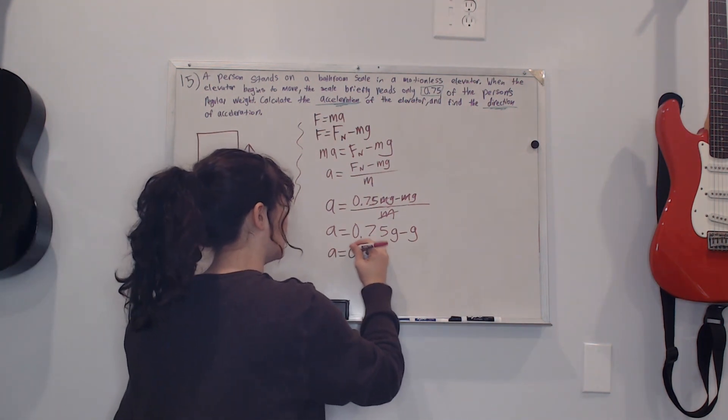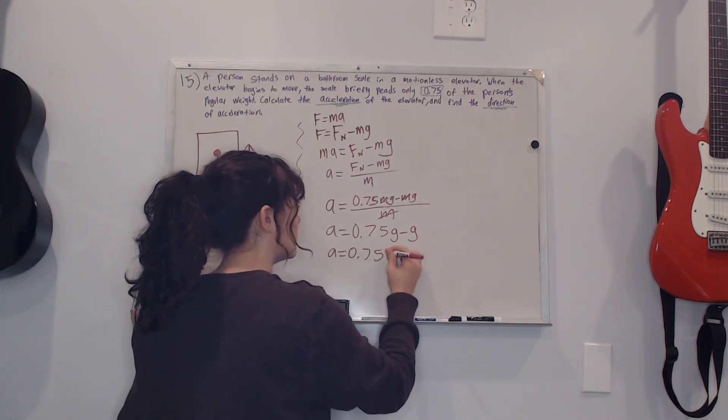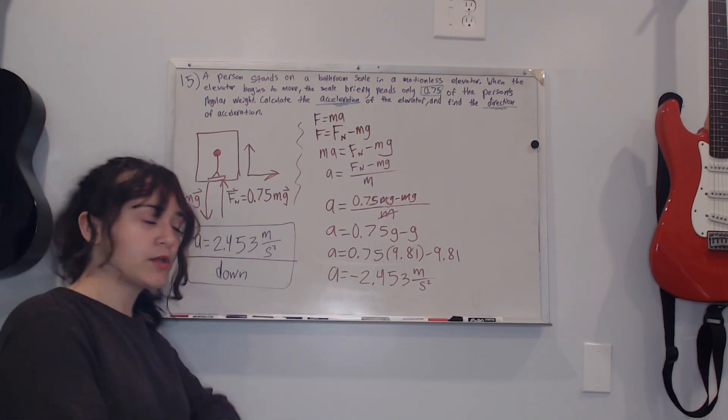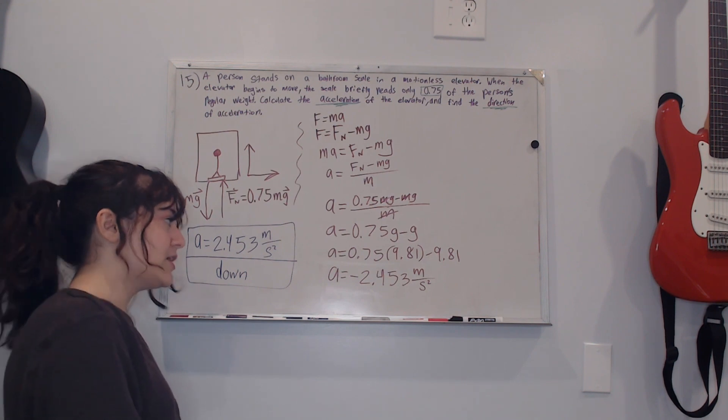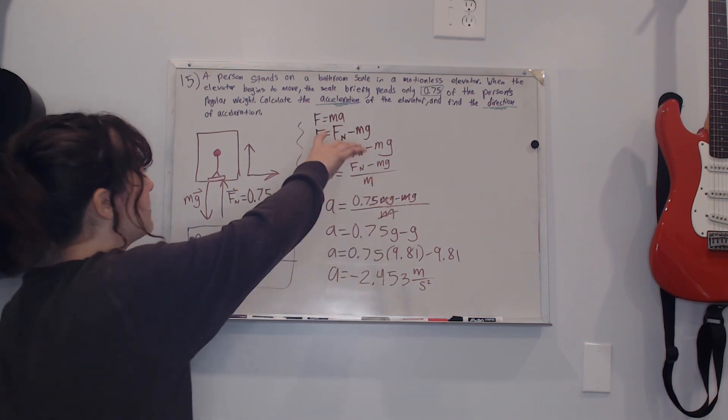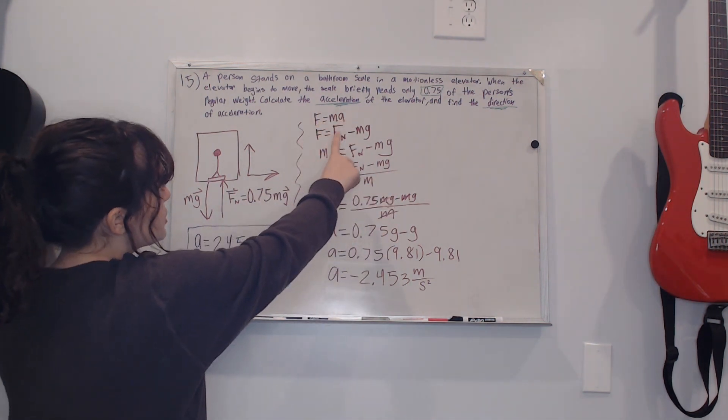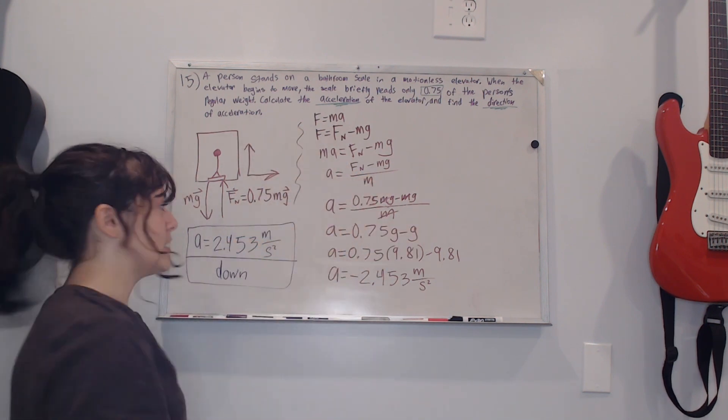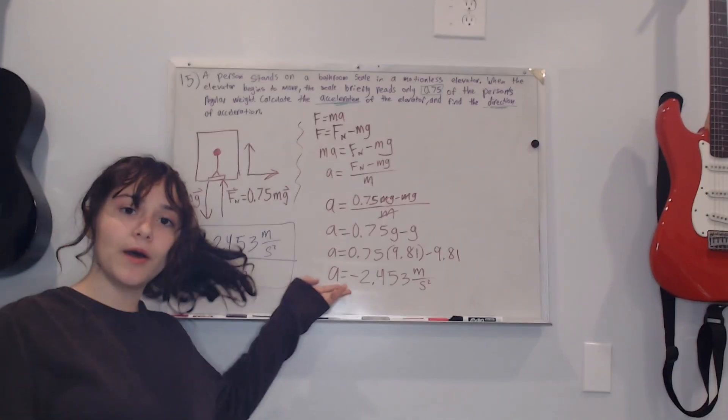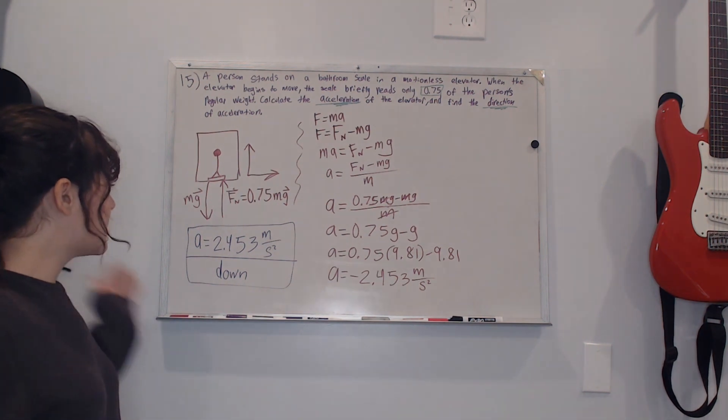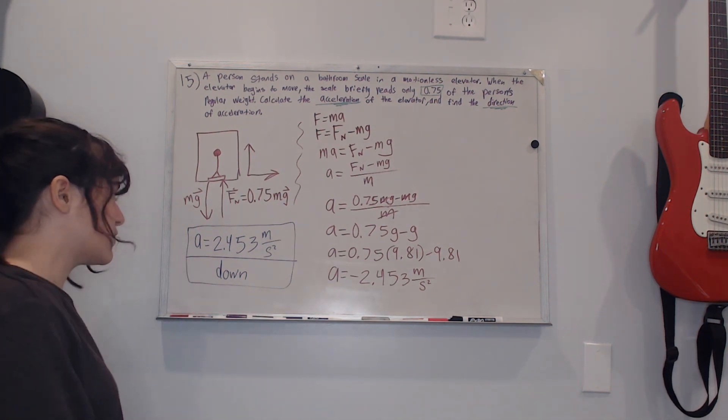So we can just replace that with 9.81. After I plugged in the 9.81 I just plugged it into my calculator and I got acceleration equals negative 2.453 meters per second squared. The question is asking calculate the acceleration of the elevator and find the direction. Since we got our number to be a negative, we know that it's down because negative is down, and the acceleration equals 2.453 meters per second squared.